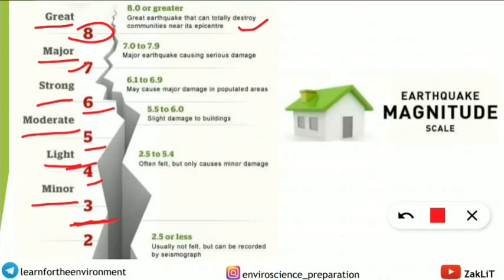For magnitude 2.5 or less, it will not be felt by us but can be recorded by a seismograph. So the seismograph records all these magnitudes. To summarize: 8 or more = great, 7–8 = major, 6–7 = strong, 5–6 = moderate, 4–5 = light, 3–4 = minor, 2.5 or less = not felt but recorded. This simple classification came in the exam, so note it down.